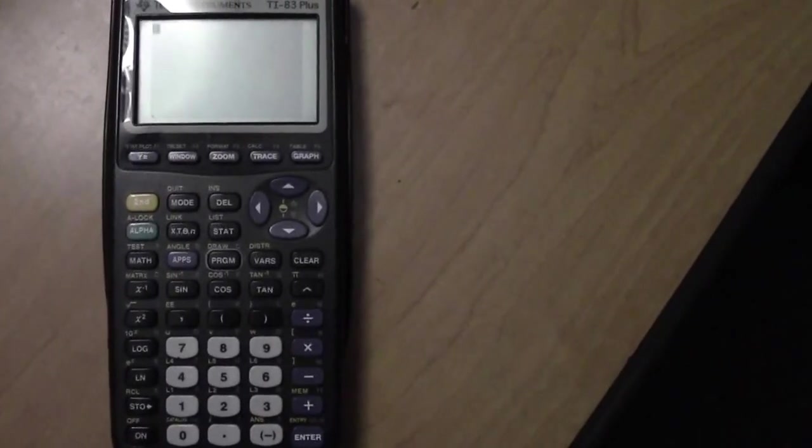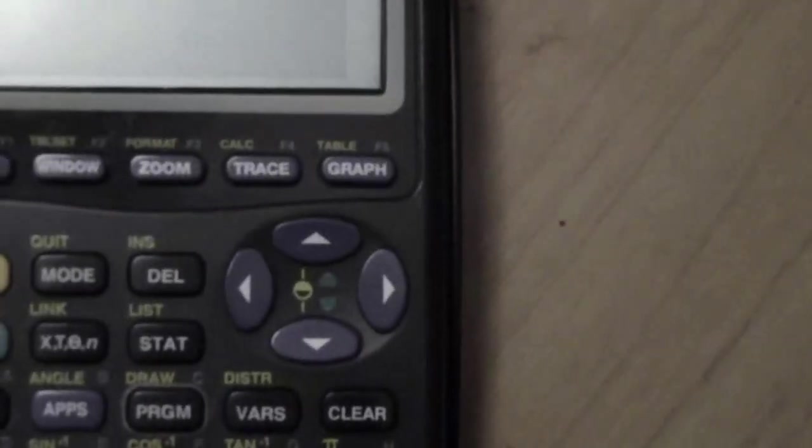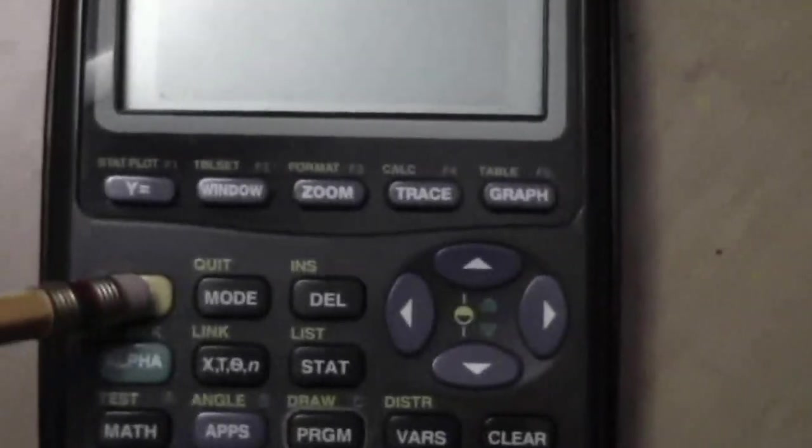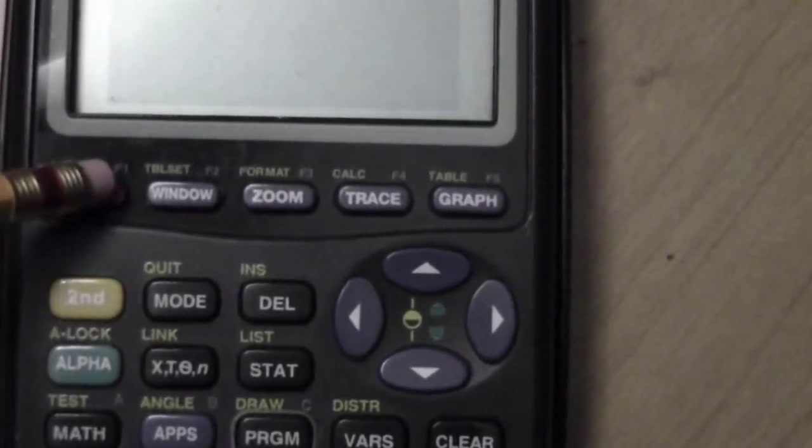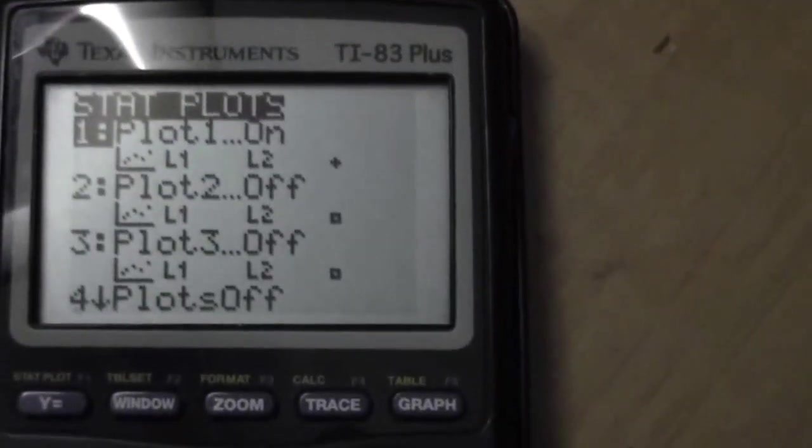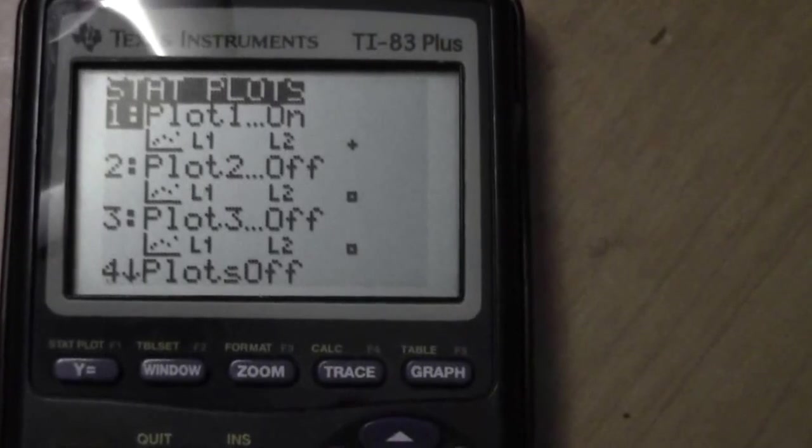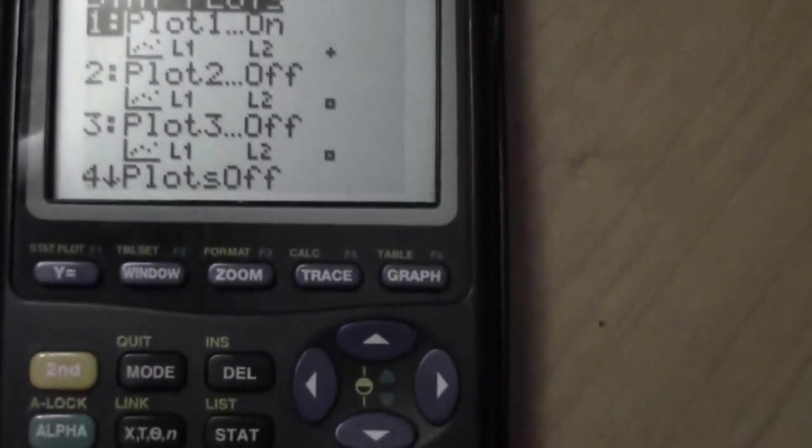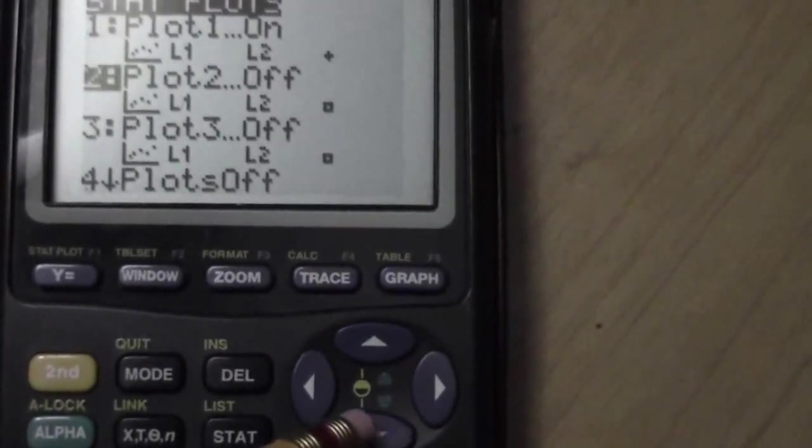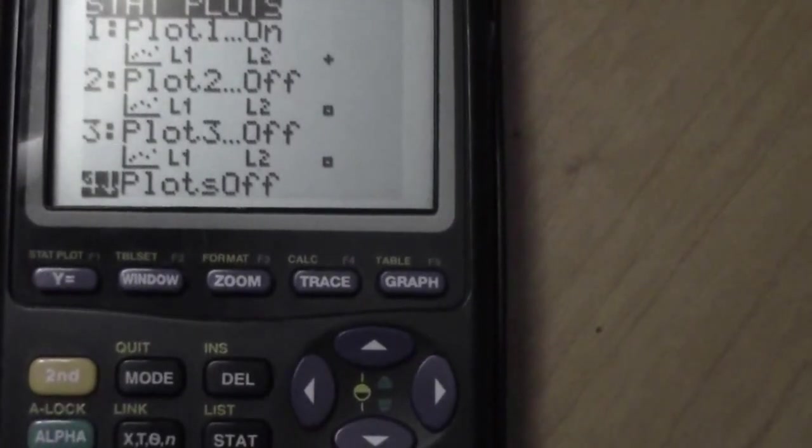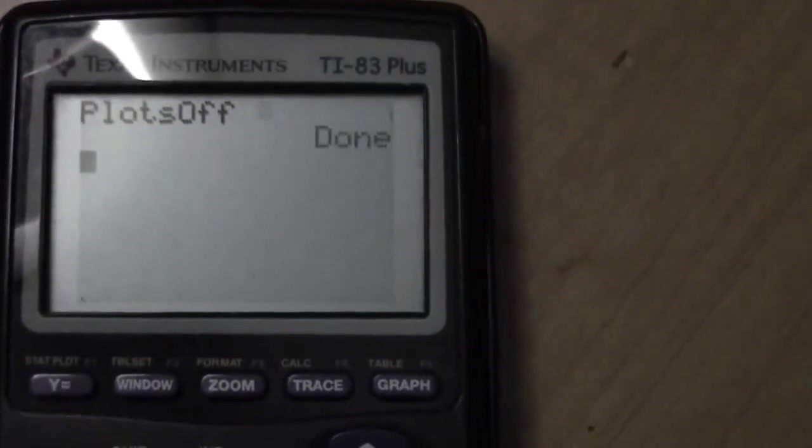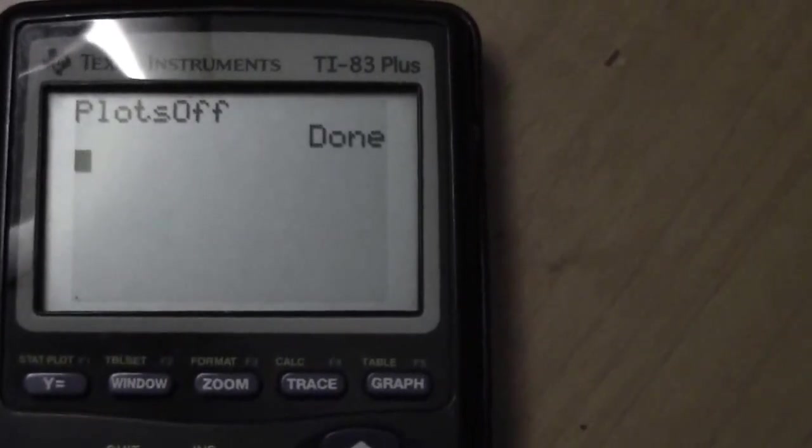First of all, when you start, make sure that your stat plots are off. You need to push second, y equals, and notice that the first one's on. It may or may not be on on your calculator, but you need to go down to option four, enter, and then hit enter again to make sure that your plots are off.